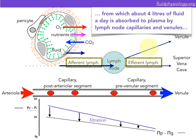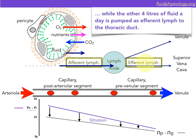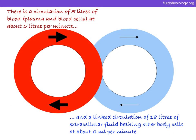From the lymph arriving at lymph nodes, about 4 litres a day of fluid is absorbed to the plasma by lymph node capillaries and venules. That leaves around 4 litres of lymph with a very high protein concentration to be pumped as efferent lymph to the thoracic duct. We can now appreciate that there are two important circulations of fluid around the body: a circulation of 5 litres of blood — plasma and blood cells — at about 5 litres a minute, and a linked circulation of around 18 litres of extracellular fluid bathing the other body cells at around 6 mls per minute.